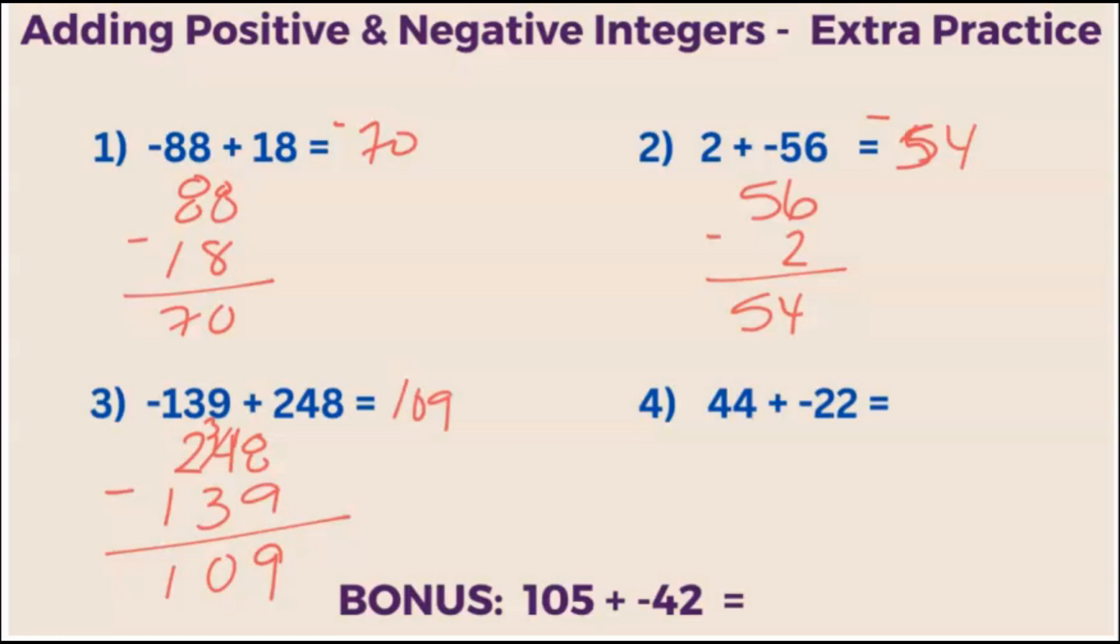Last one. What is positive 44 plus negative 22? Let's set our subtraction problem up. And we get 22.